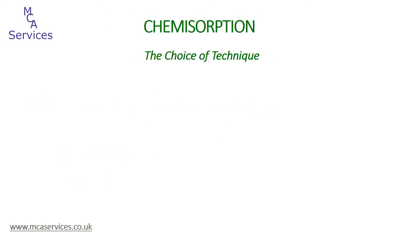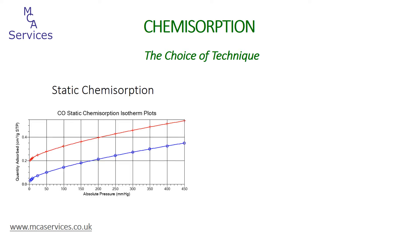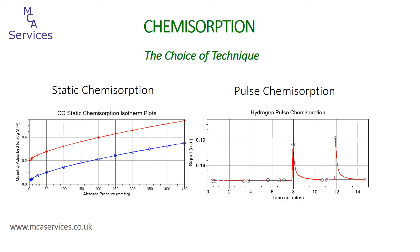There are principally two chemisorption techniques. The first is static chemisorption, by which two isotherms are measured in much the same way as a physisorption experiment. The second is pulse, or dynamic chemisorption, by which a series of adsorbate injections of known volume are made to the sample.